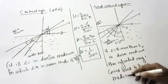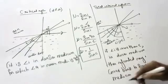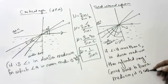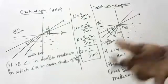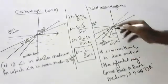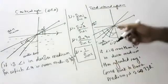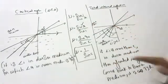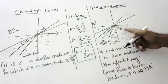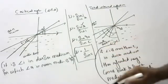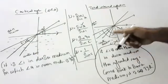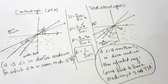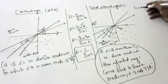The refracted ray comes back to the same medium and this is called total internal reflection. Even though it comes back to the same medium, we cannot call it reflection, because the angle of incidence is not equal to the angle of reflection — it won't obey the laws of reflection. It is refraction only, because Snell's law is constant.